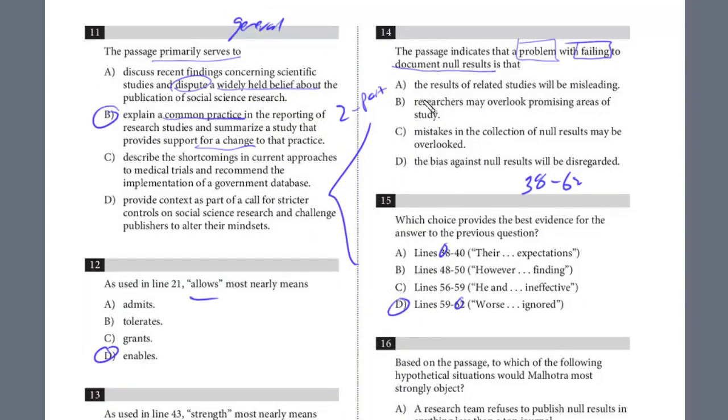Let's take a look. We know it's going to be 59 to 62. And what's the problem? The results of related studies will be misleading. This is correct. It's sort of broad general language. They don't state that the published results will seem stronger. They just say misleading, but this is still a true statement. So the answer, D for 15 and A for 14.